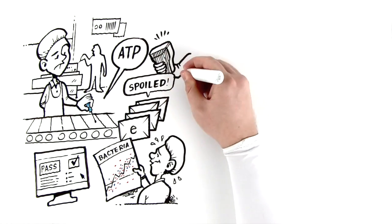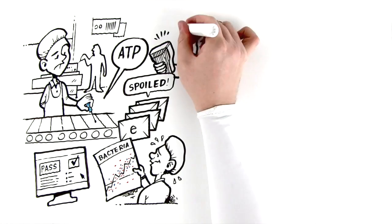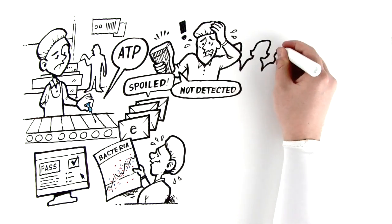Turns out, Jim's ATP test is not sensitive enough to detect invisible food and microbes that are left on equipment after ineffective cleaning.